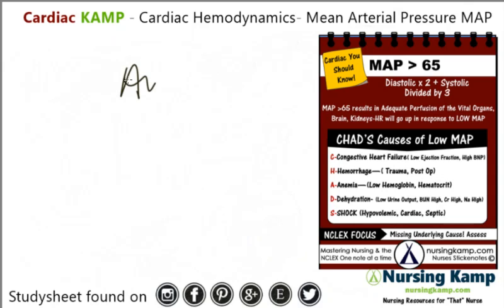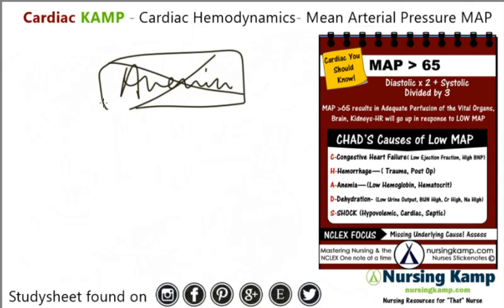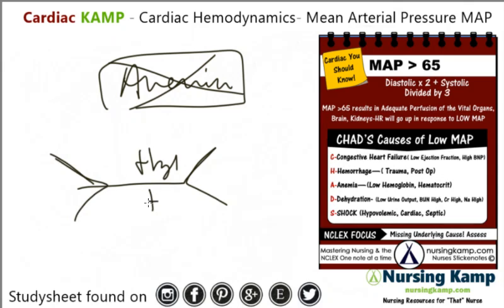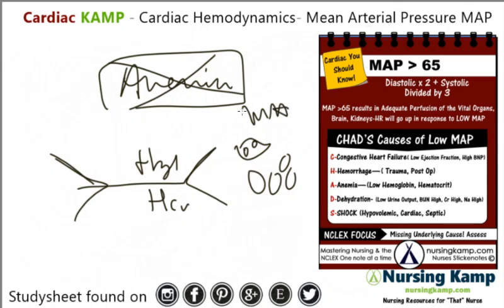Next is anemias — the A in CHAD's. Usually anemia is unacceptable; there's always a reason for the anemia. So whenever you hear anemia, you ask why. It could be low hemoglobin and hematocrit, and there's just not enough red blood cells to carry and maintain the mean arterial pressure.